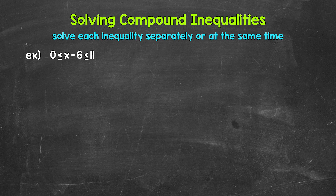Let's jump into our example where we have x minus 6 is greater than or equal to 0 and less than or equal to 11. In other words, x minus 6 has to be greater than or equal to 0 and x minus 6 has to be less than or equal to 11.